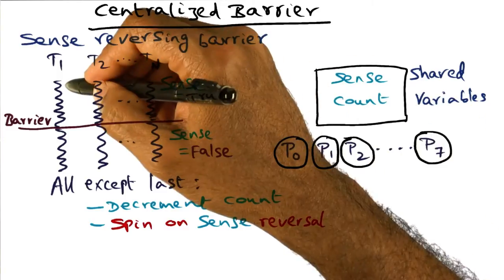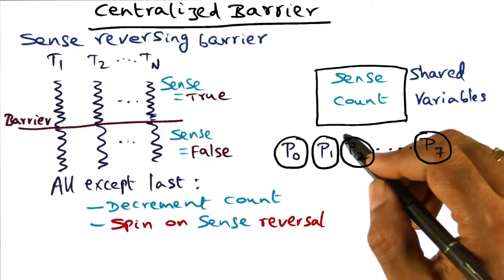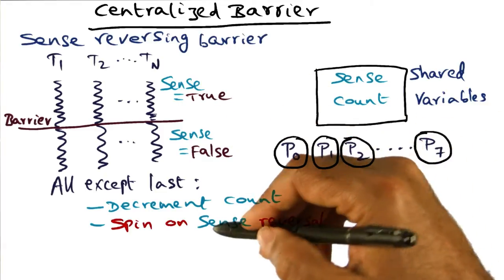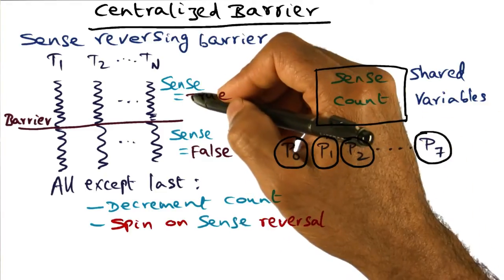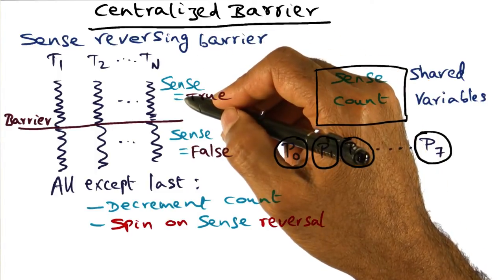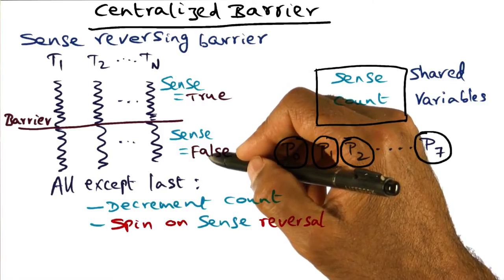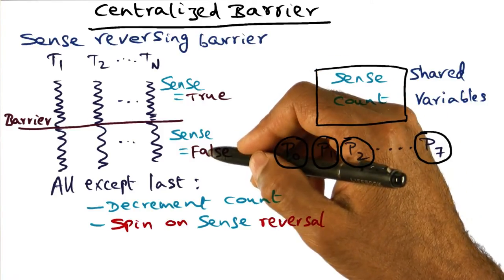So if T1 comes along, it decrements the count, and it's not going to worry about whether the count has become zero or not. All that it is going to wait on is for the sense to reverse. It's saying, well my sense is we are on the true barrier. I'll stay here until the sense becomes false. I'll know then that we've moved on to the next barrier point.